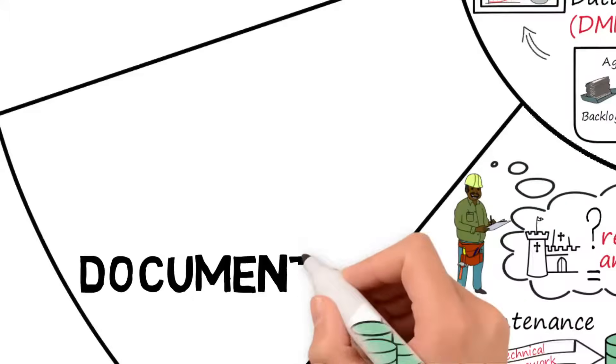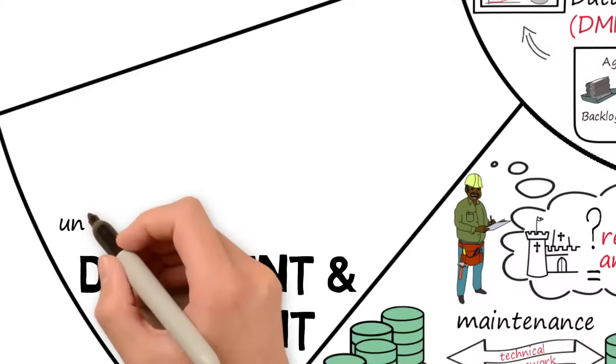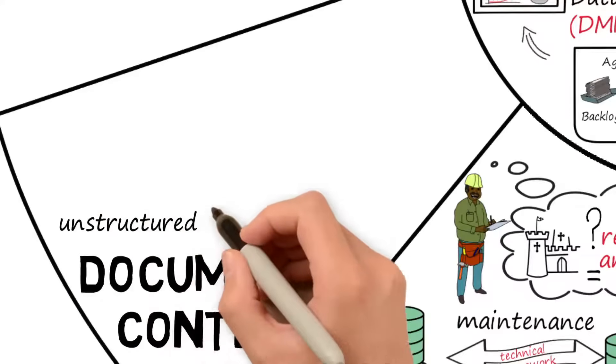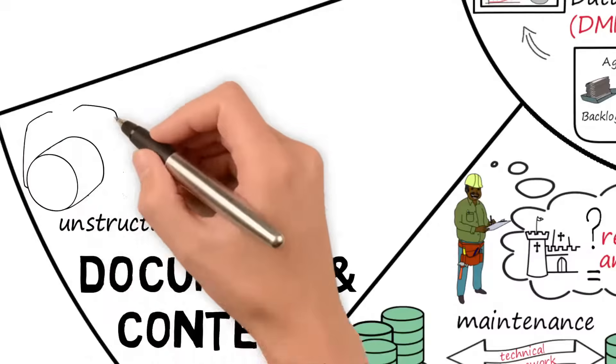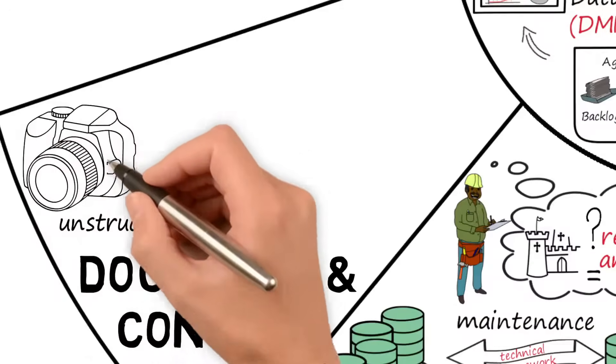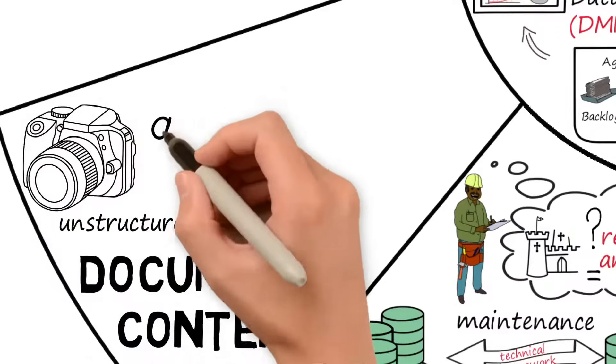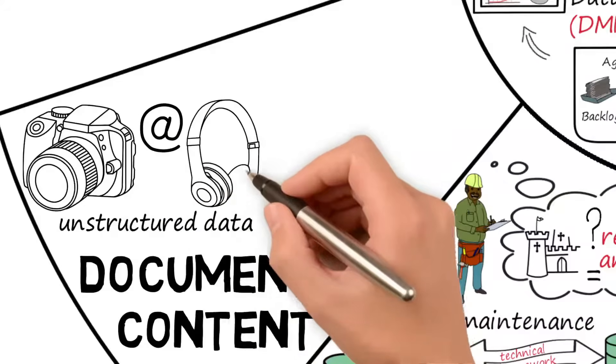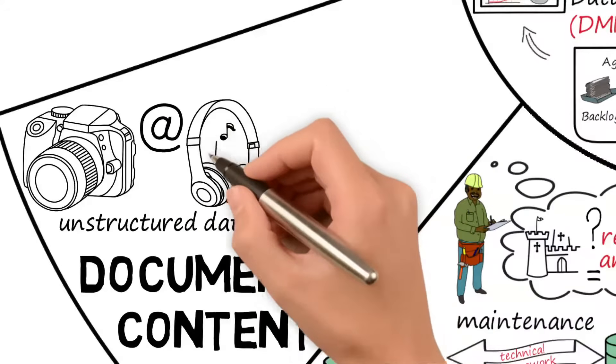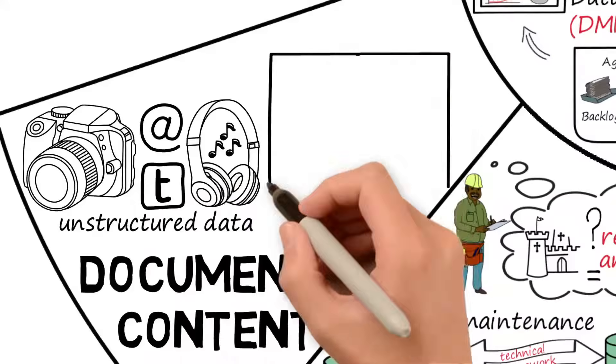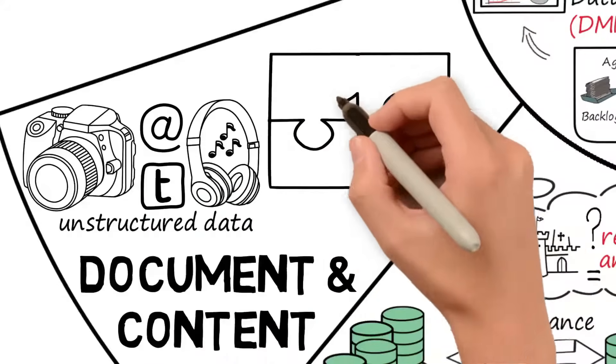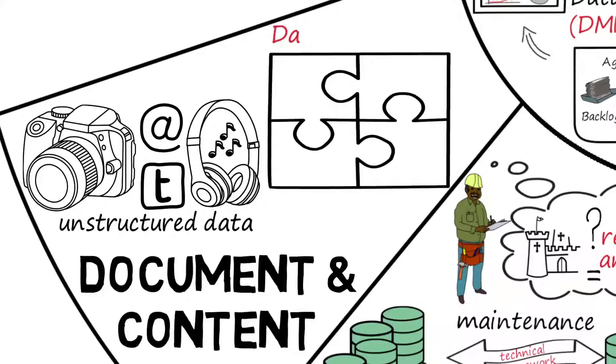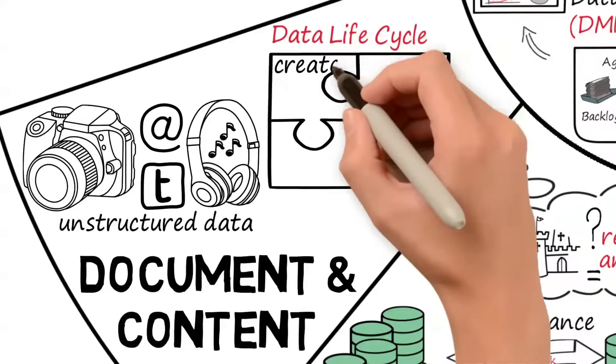But if the buyer wants to see the progress and is not able to visit the construction site, captured pictures can tell a thousand words, right? Well, in data management vocabulary, pictures, email, audio or for example Twitter messages are called unstructured data. The process to handle this type of data is identical to database operations, which states the data lifecycle for structured data.